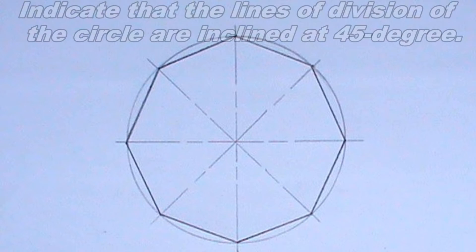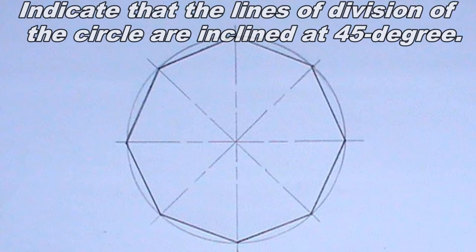I will reduce the octagon but there is a need to indicate that the lines of division of the circle are inclined at 45 degrees.